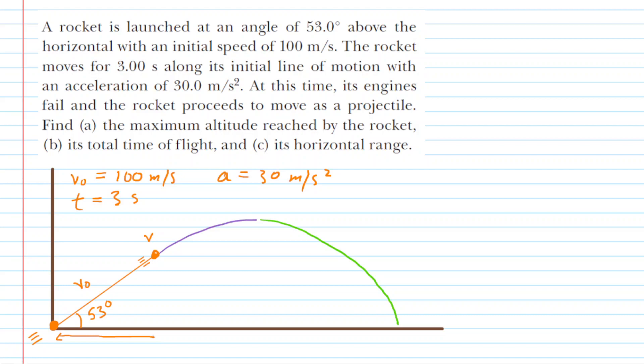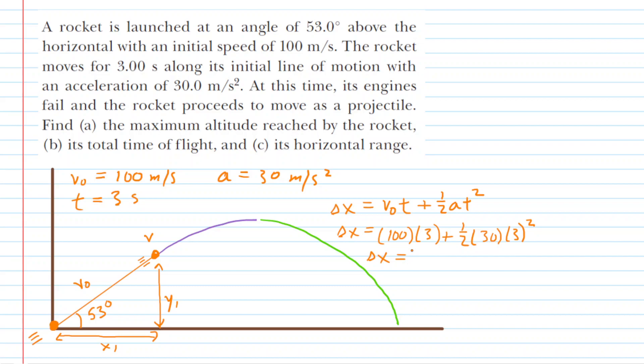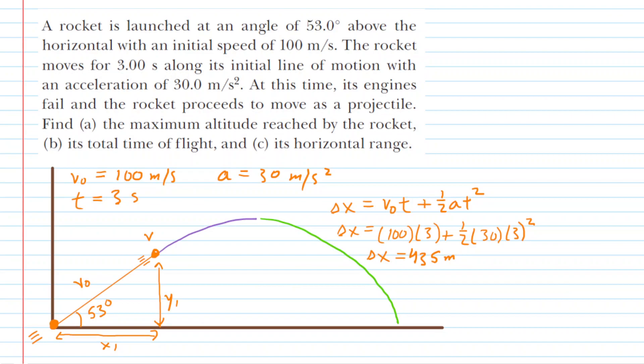We're going to figure out how far the rocket has traveled horizontally, which we'll call x1, as well as how far it has traveled vertically, which we'll call y1. Since it's moving along a straight line, we can use the kinematics equation. This delta x represents the distance traveled along that straight line path. Plugging in the known values, we find that this distance is equal to 435 meters.